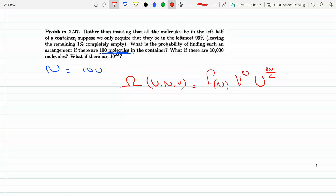N is the number of molecules, U is the total energy, total kinetic energy of the gas molecules, and V is the volume of the container. In this case, we reduce the volume of the container to 99% of its original size.